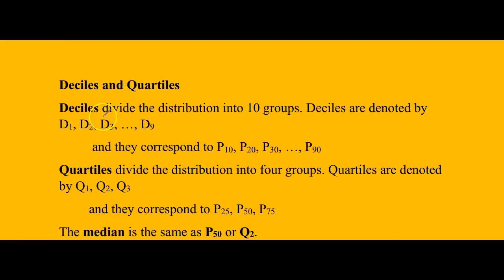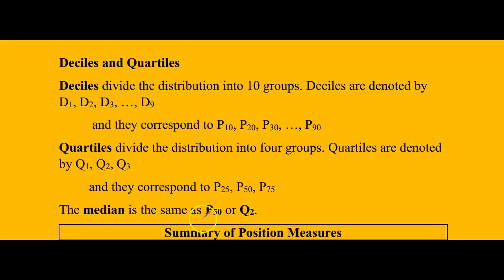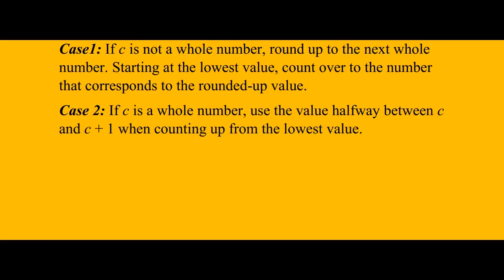Just for knowledge sake, deciles divide the distribution into 10 groups. Quartiles divide into four groups. In terms of percentile, they correspond: decile one corresponds to 10, decile two corresponds to 20, and so forth. Quartile one corresponds to 25 percent, quartile two corresponds to 50, quartile three corresponds to 75. The median is the same thing as percentile 50 or quartile two. They are in the middle.